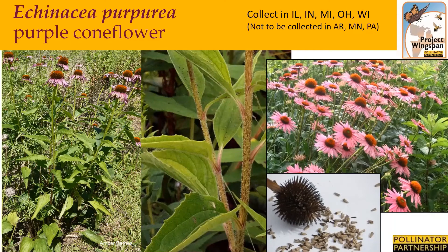Echinacea purpurea, or purple coneflower, is native to moist prairies, meadows, and open woodlands. It typically grows two to four feet tall, with stems that have purple streaks. Its leaves are ovate to broadly lanceolate, and they have widely spaced teeth. Their flowers span two and a half to four inches. Collection time is late summer to early fall. The seed will be ready for harvest when the heads turn dark brown to black. These may feel prickly to your bare hands, so gloves are advised for harvesting.